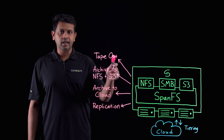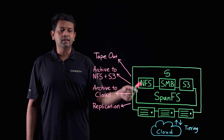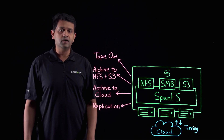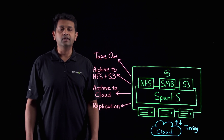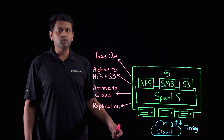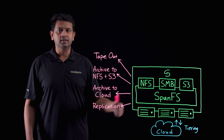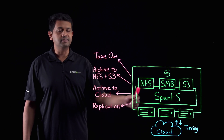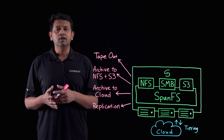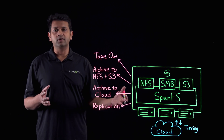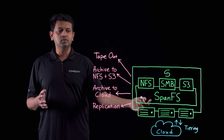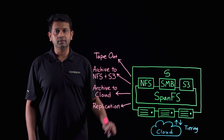Coeicity can also do tape-out natively. It can archive to other NFS and S3 storage, or it can archive to the cloud. It can also replicate to other Coeicity clusters. Because of this, you get tape-out and archival built-in with the SpanFS file system. Typically, when you buy a NAS, you have to buy backup software separately to do tape-out via NDMP. But with Coeicity, you get tape-out and archival built-in.